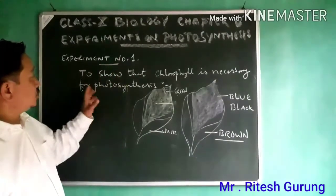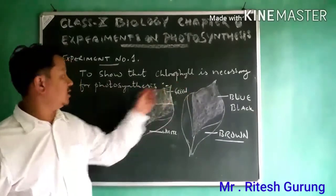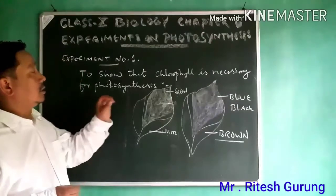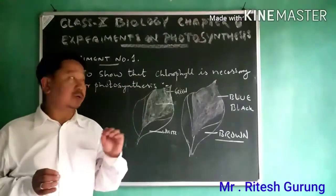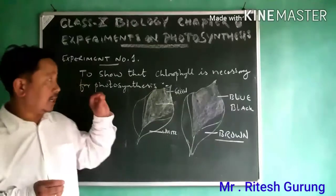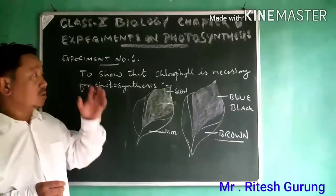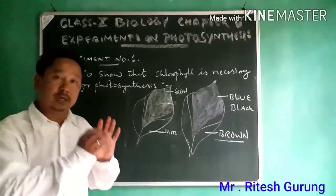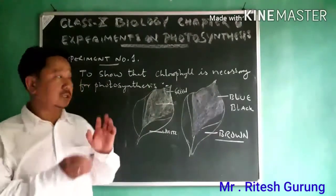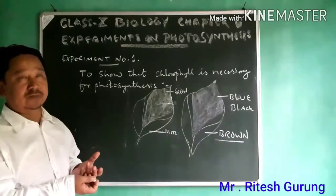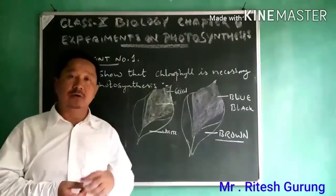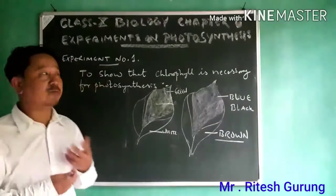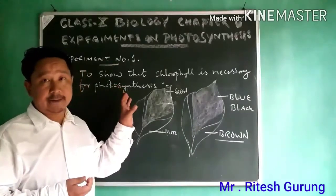Experiment number one: to show that chlorophyll is necessary for photosynthesis. As you all know, chlorophyll is very important for photosynthesis. Only those plants where chlorophyll is present can carry out photosynthesis. Organisms like fungi and mushrooms cannot photosynthesize because chlorophyll is not present there.